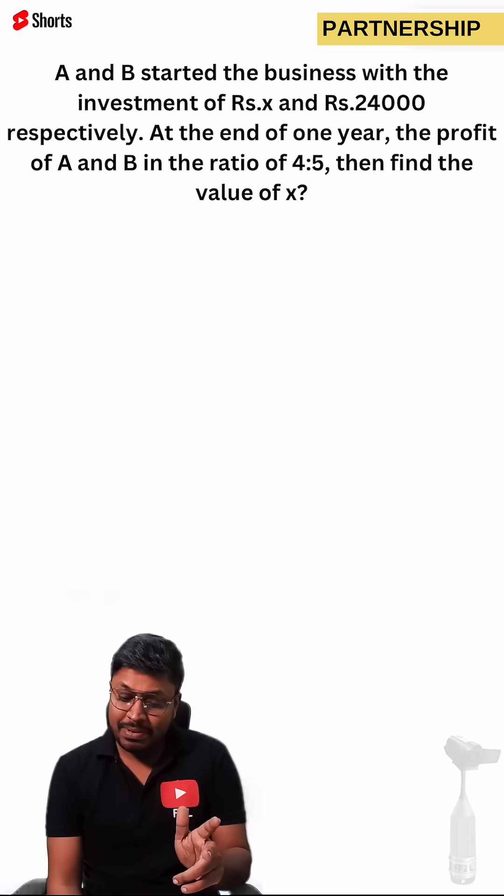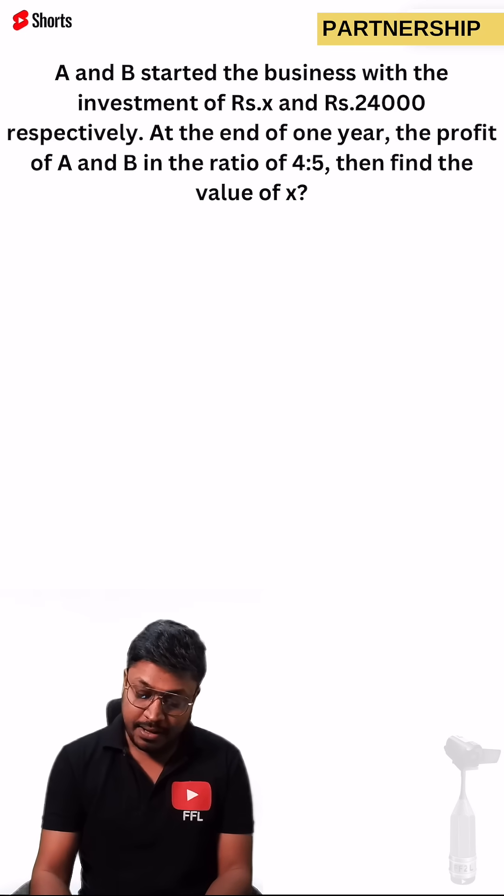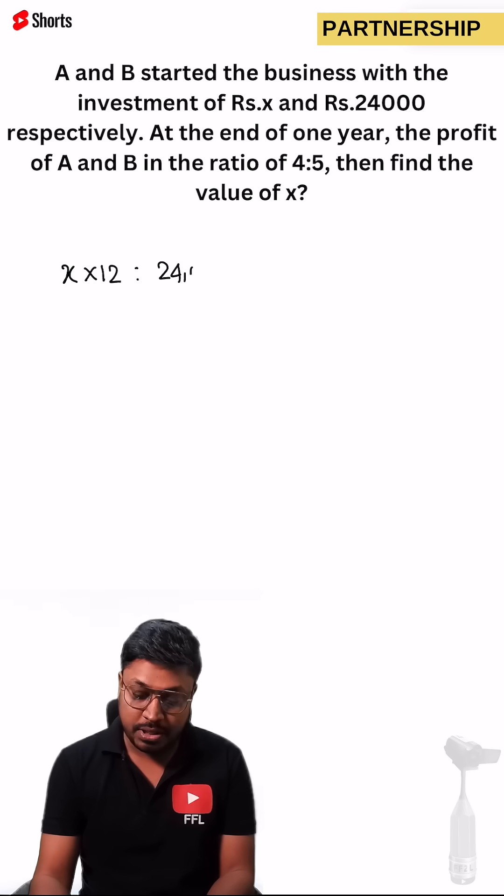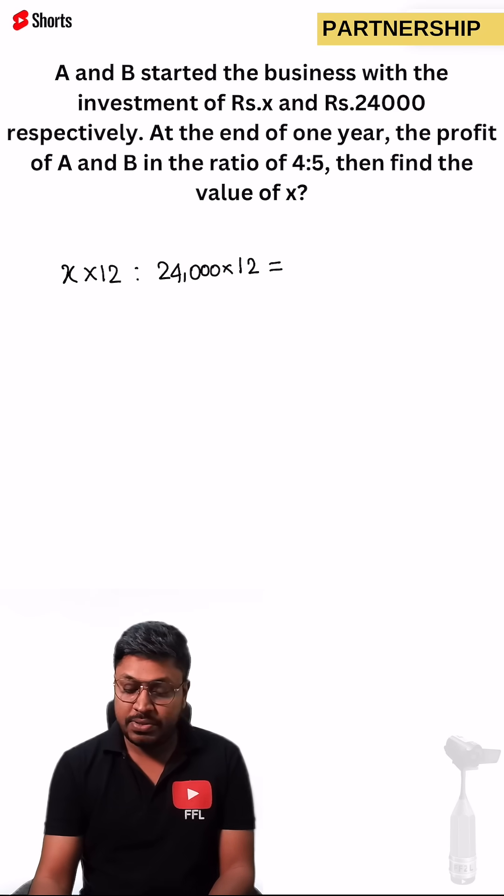And the two persons were in the business for the complete one year that is 12 months. So we can directly solve this question where A investment is X and he was there in a business for 12 months. B investment was 24,000 and he too was in the business for the complete 12 months. So into 12 is equals to their profit ratio that is 4 is to 5.